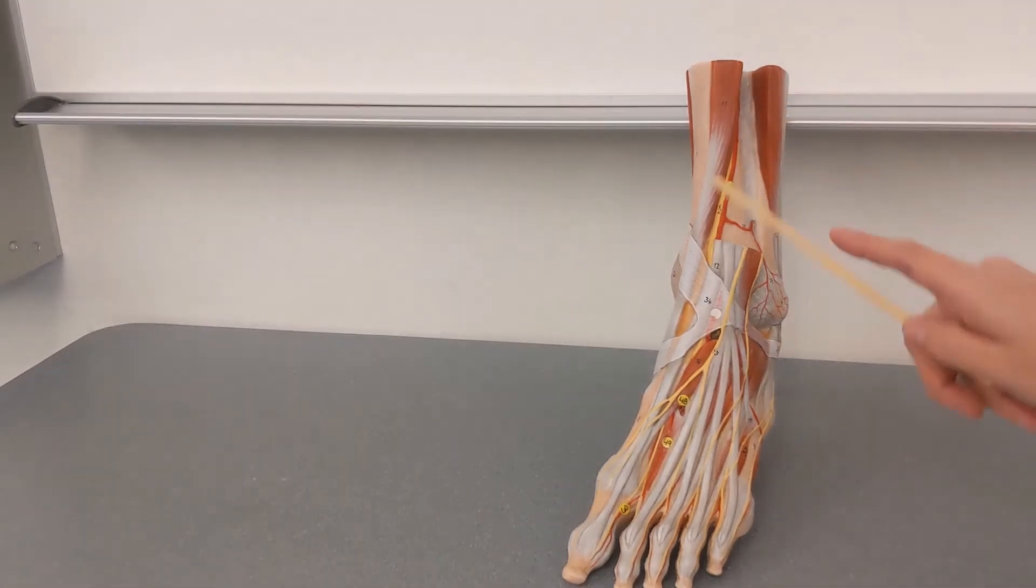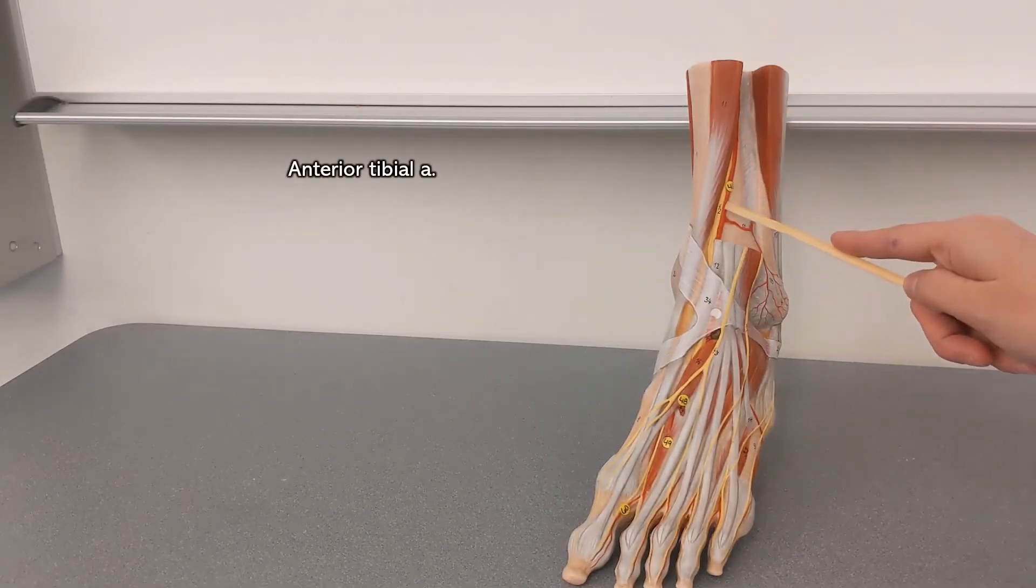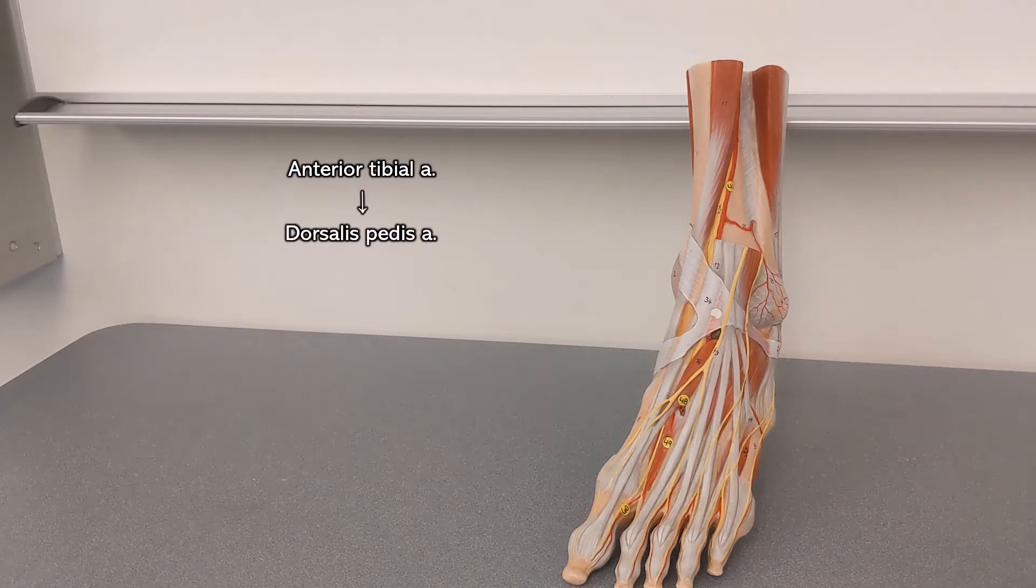So all of the blood that ends up going to the dorsal part of the foot is coming from the anterior tibial artery. As the anterior tibial artery passes onto your foot and goes over your ankle, now we call it the dorsalis pedis artery.